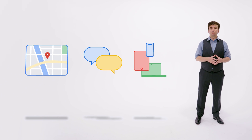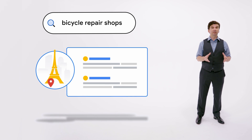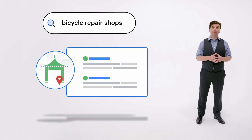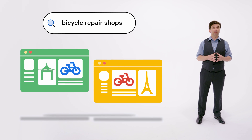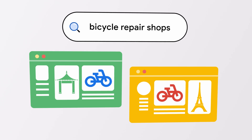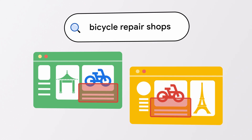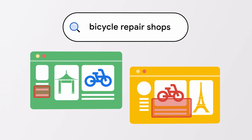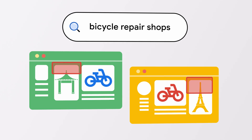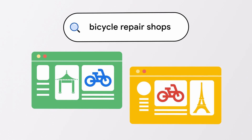For example, searching for 'bicycle repair shops' shows different results to a user in Paris than it would to a user in Hong Kong. We also need to take the quality of the page and the site into consideration during ranking. Quality is determined by factors like the uniqueness of the content, the relative importance of the page on the internet, and a lot more. For more detail on how we determine quality, we've published several help pages linked in the description.